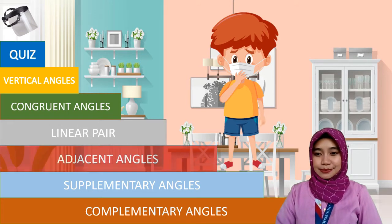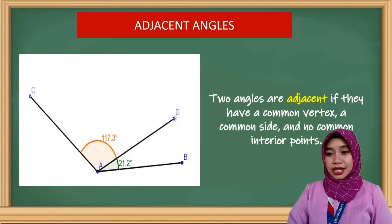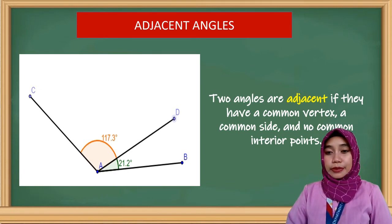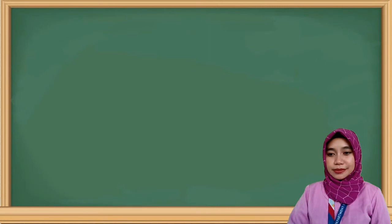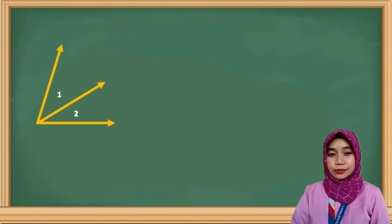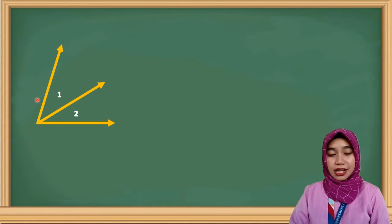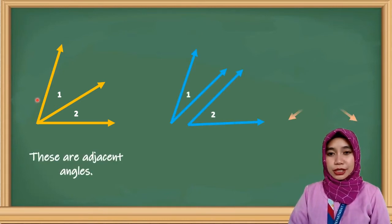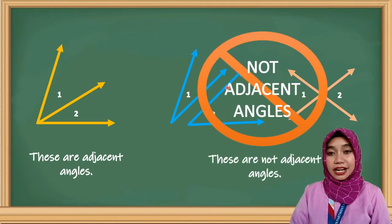Now let's proceed to adjacent angles. Two angles are adjacent if they have a common vertex, a common side, and no common interior points. For example, angle 1 and angle 2 share a common side and a common vertex, and they have no common interior points. However, in some figures, angle 1 and angle 2 do not have a common side and a common vertex. Therefore, those angles are not adjacent angles.